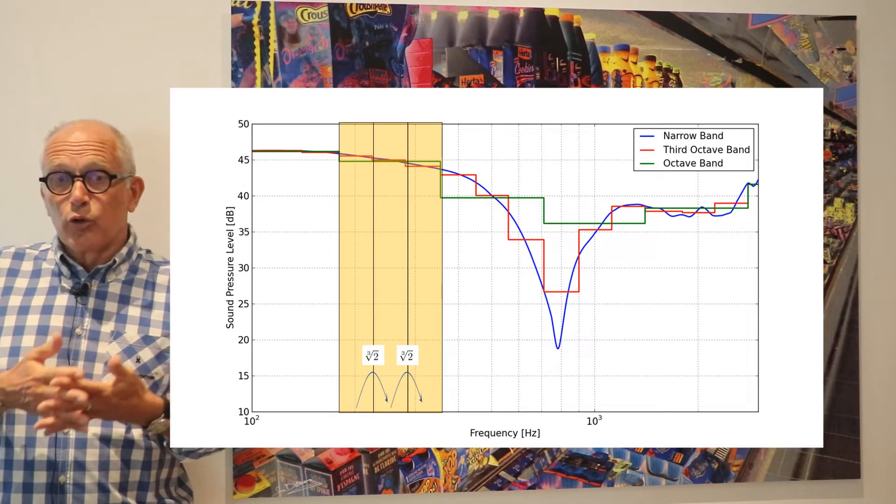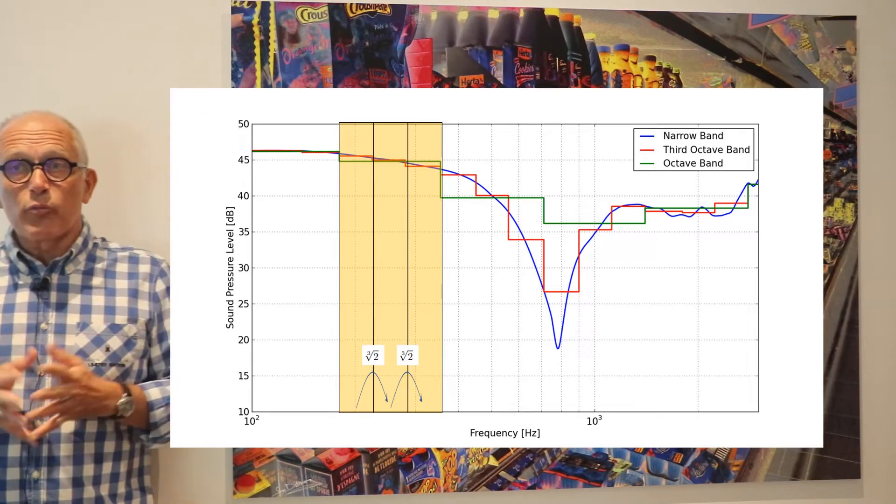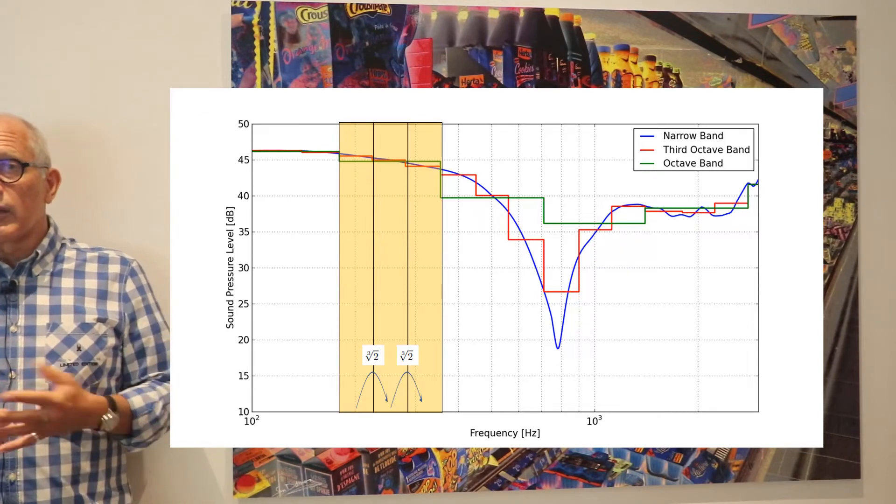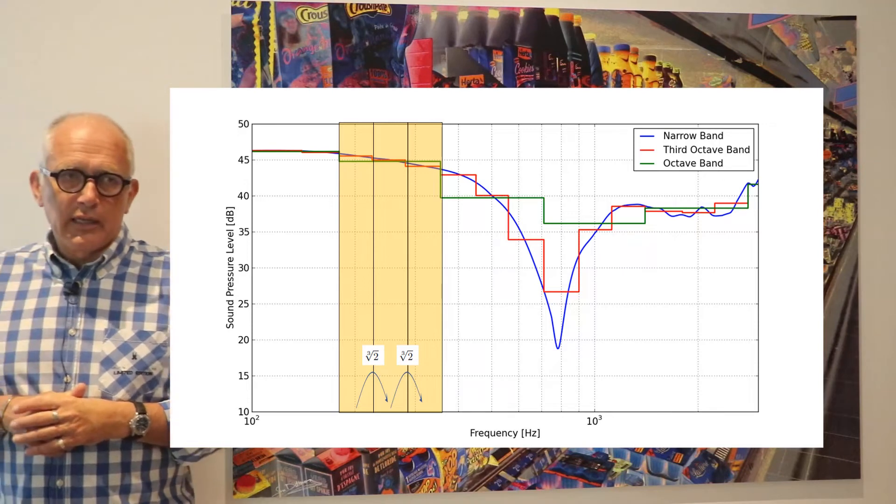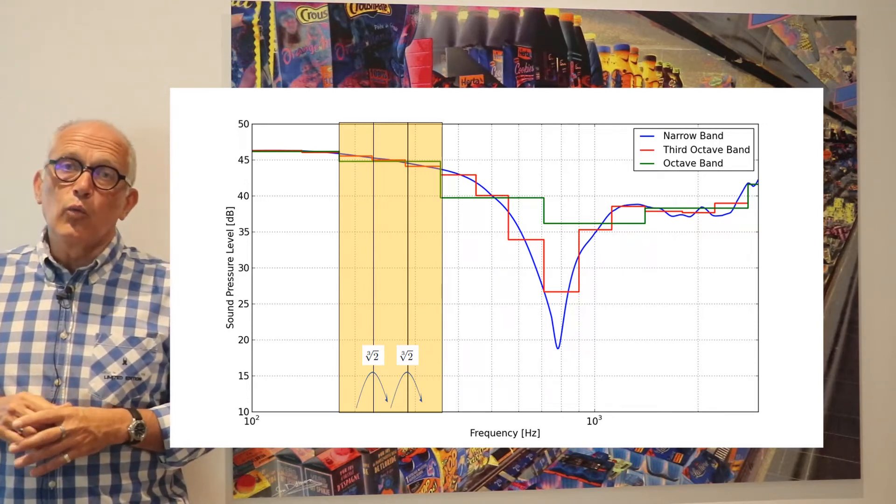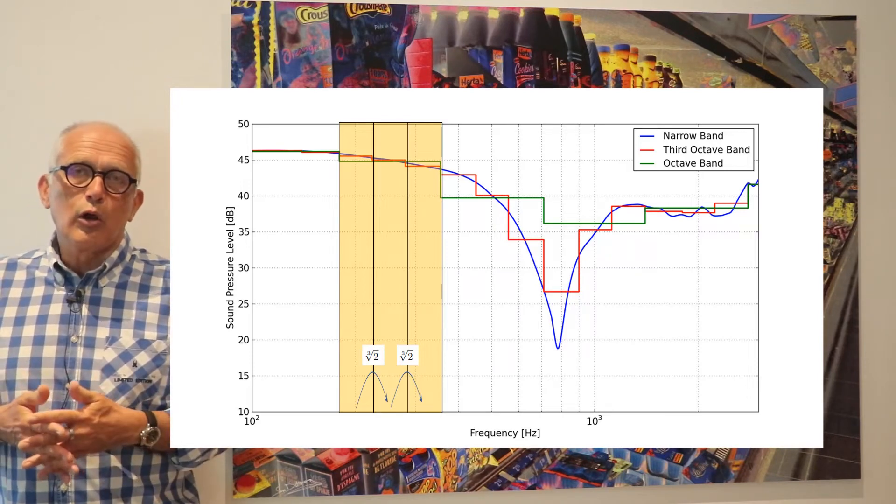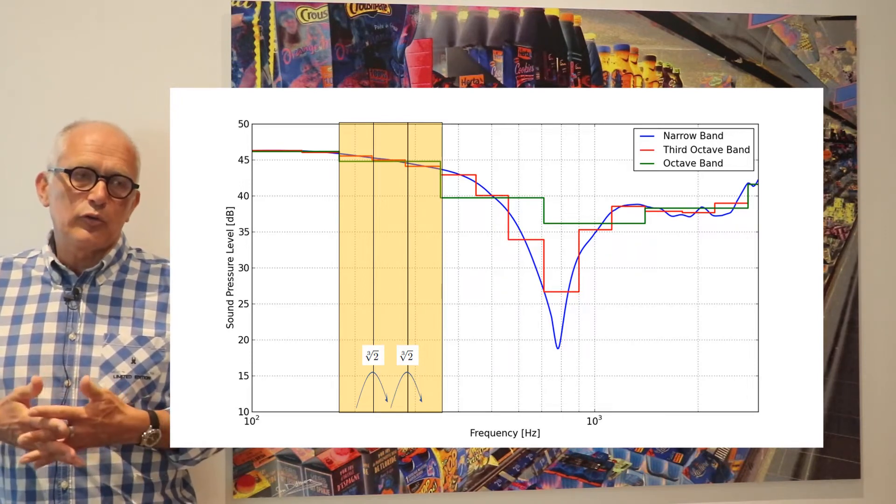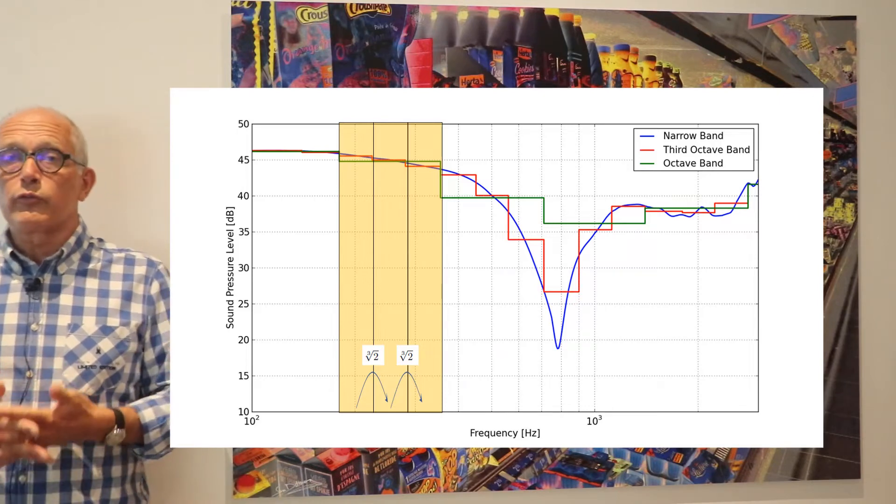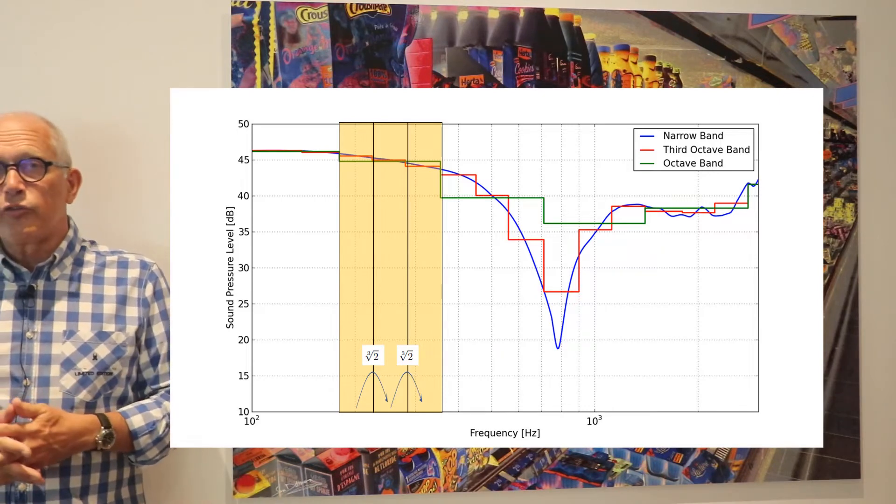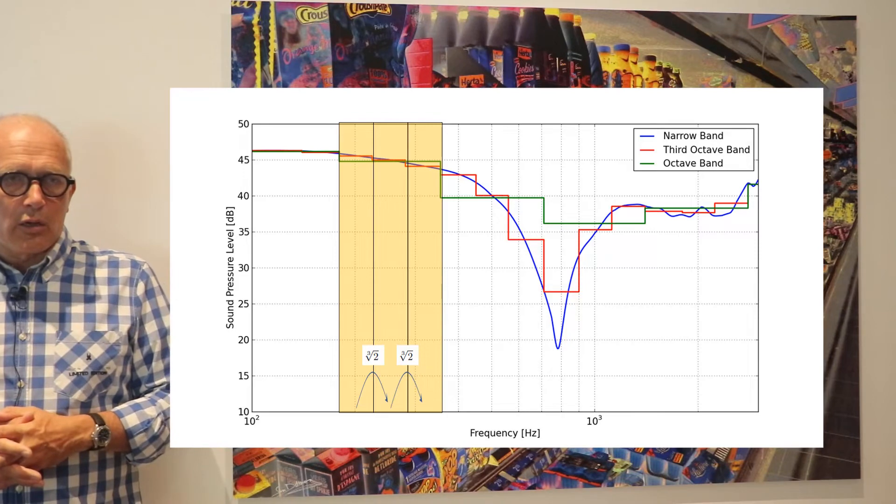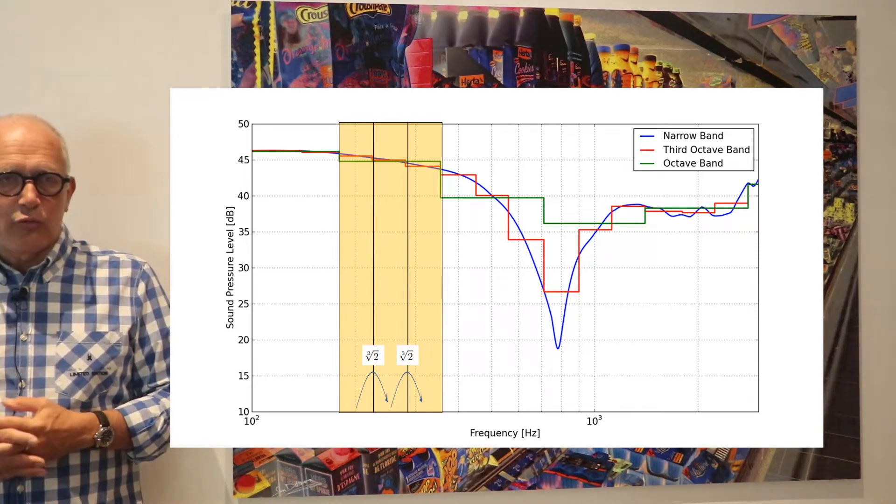And if you want to have even narrower bands, you can take twelfth octave band where the ratio is the twelfth root of 2, which corresponds to an equal semitone in music. For instance, from C to C sharp, or from E to F.